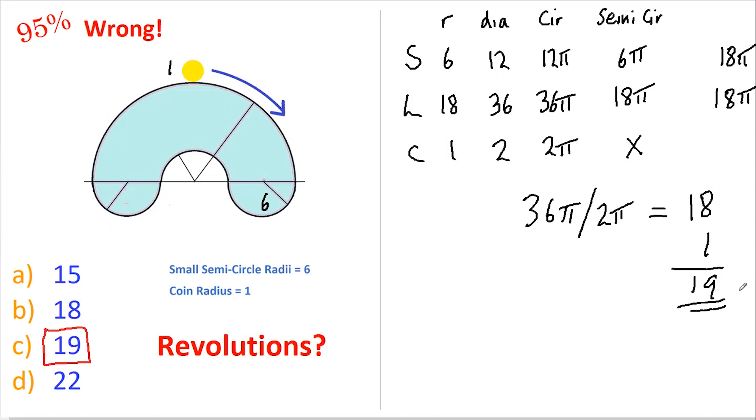Now, be honest, did you get it right? If you don't believe this is correct, do the following: get hold of two identical coins, hold one still on the table and slowly rotate the other one all the way round. Their circumferences are equal, but you'll see that the coin makes two revolutions.